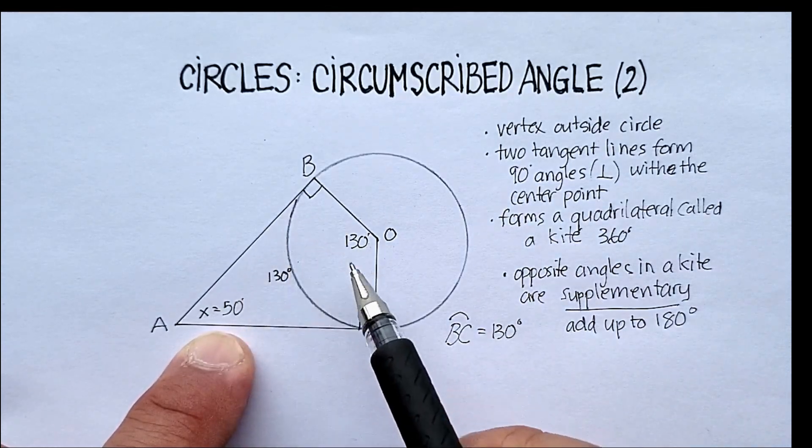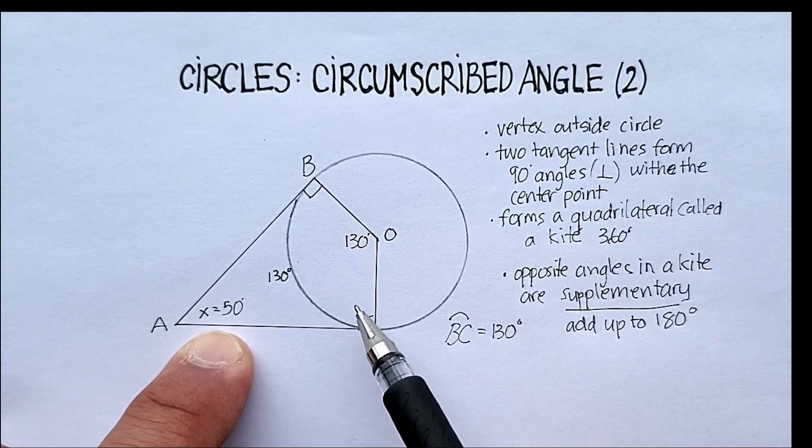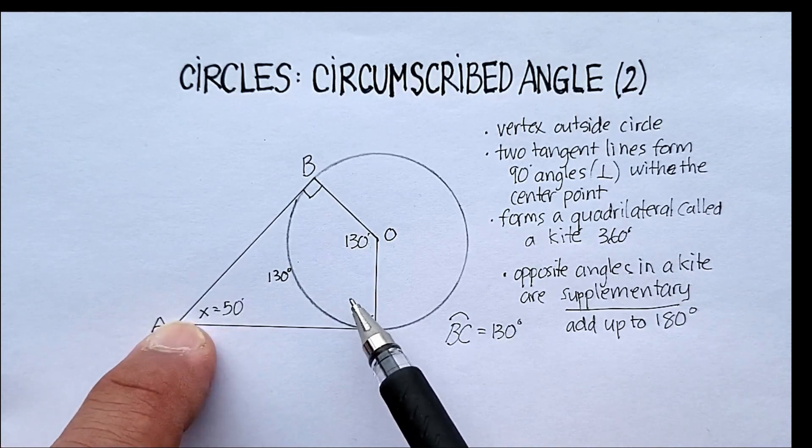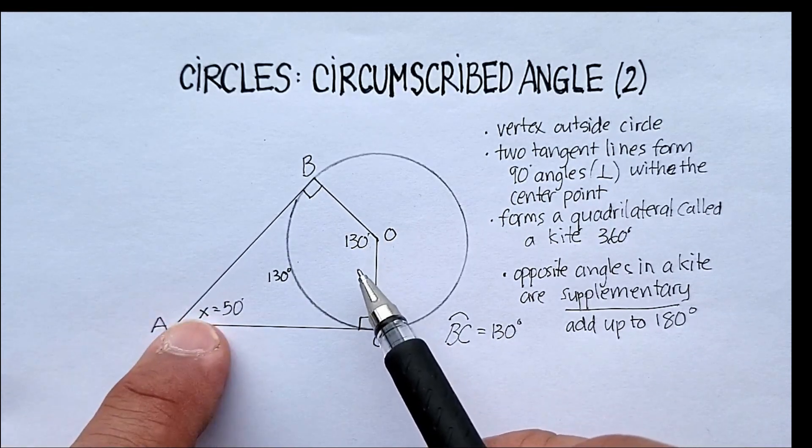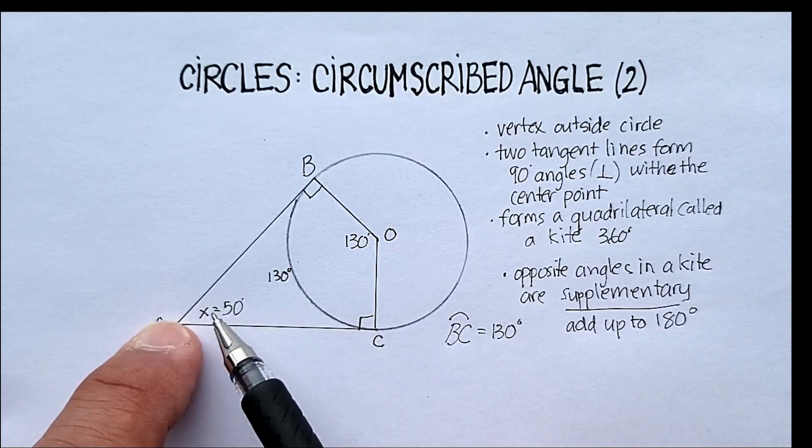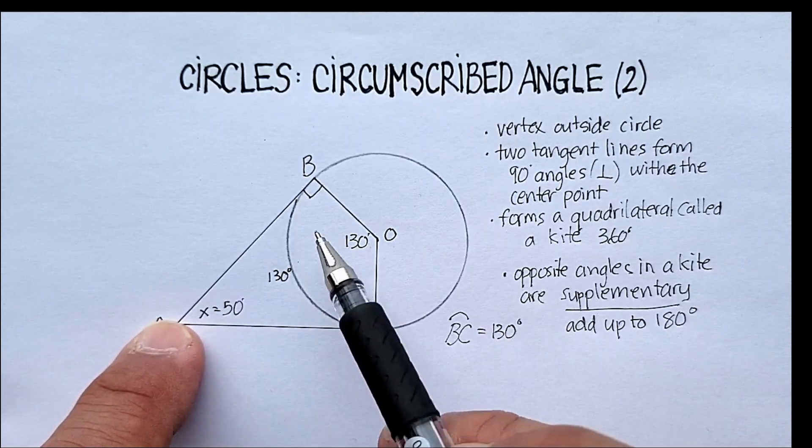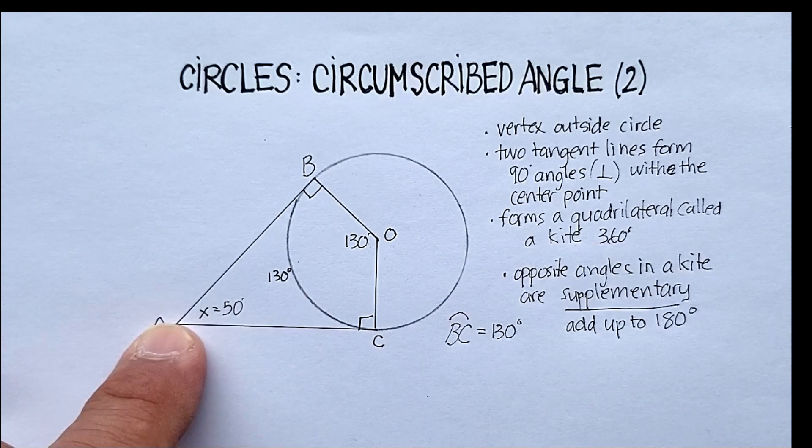So two methods again. Go ahead and add up all the angles. If you know three of them, add them up and subtract, and you'll find the missing angle. In this case, it's the circumscribed angle. Or just realize that opposite angles, the second method, are supplementary. I hope that was helpful.